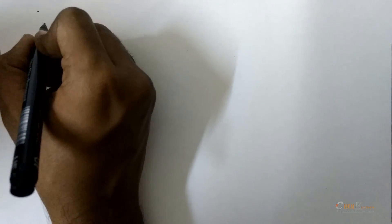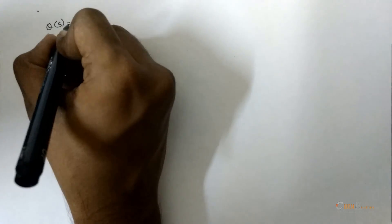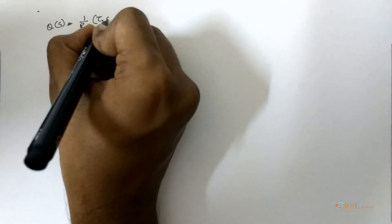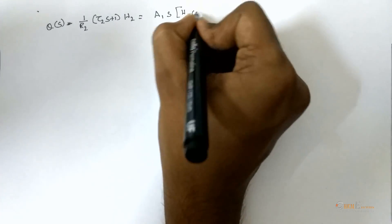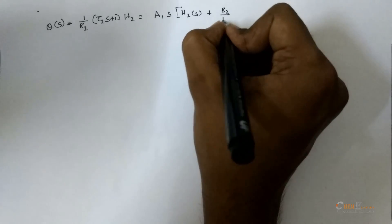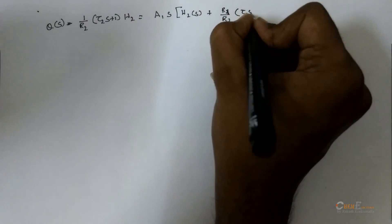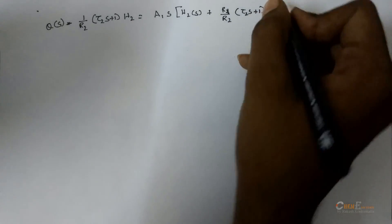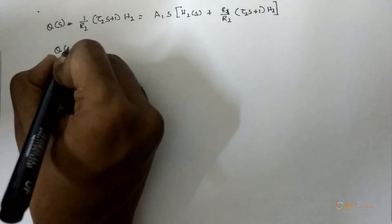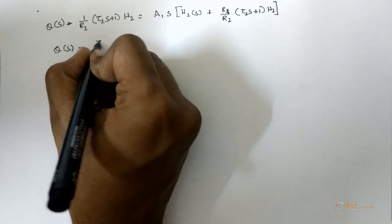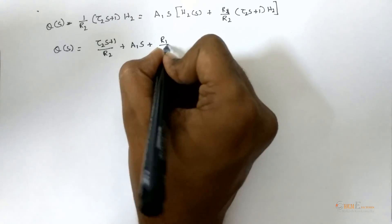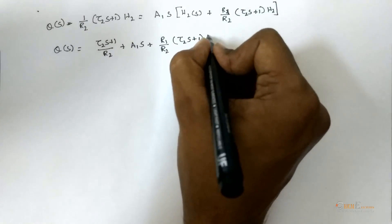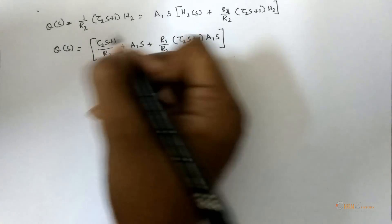Now substitute H1(s) from equation 2 and the expression for (H1 - H2) into the Laplace-transformed equation. Substituting gives: Q(s) minus (1/R2) / (τ2·s + 1) · H2(s) equals A1·s·H2(s) + (R1/R2) / (τ2·s + 1) · H2(s).